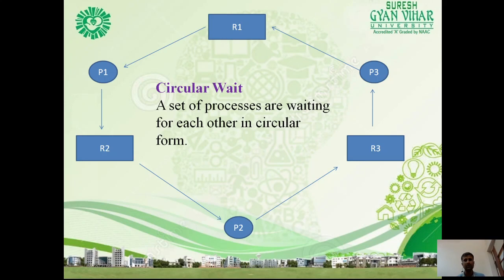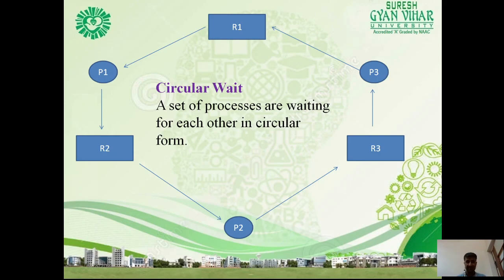The fourth condition is circular wait. P1 is waiting for R2, which is assigned to P2. P2 requires R3, which is assigned to P3. P3 requires R1. This forms a circular dependency. A set of processes are waiting for each other in a circular form — this is circular wait.